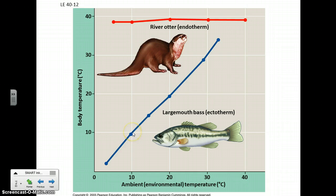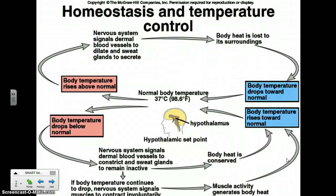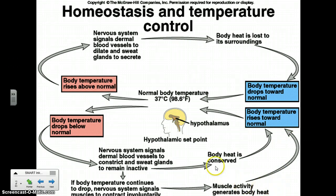It kind of makes sense that the fish becomes less active. In a lake, particularly way up north that's frozen over, there's going to be less to eat, and so it's good that their metabolism slows a bit. We have lots of mechanisms to help maintain this homeostasis.